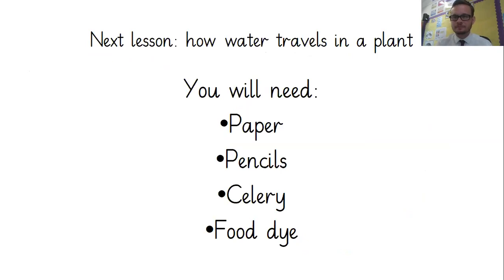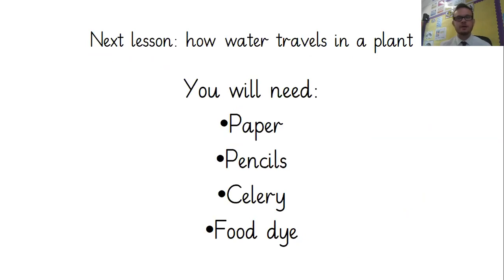So for the next lesson, we're going to see how water travels in a plant, and I've actually got the experiment started already ready to show you in the next lesson. You're going to need paper and pencils as always. If you can and want to try this investigation yourself, go and get some celery and some food dye — be very careful with that food dye because it stains — and some water and a jar. You can do this alongside me in the next lesson if you want to. Don't worry if you don't though, because you'll see what I'm doing. I hope you enjoyed today — we're going to find out what happens and how water travels in a plant together next time. Thank you and I'll see you next time.